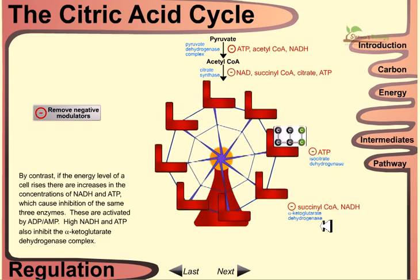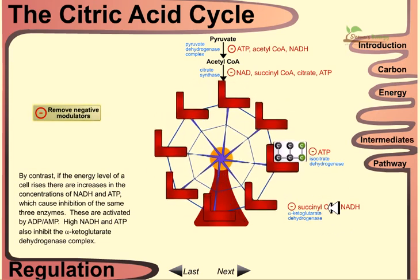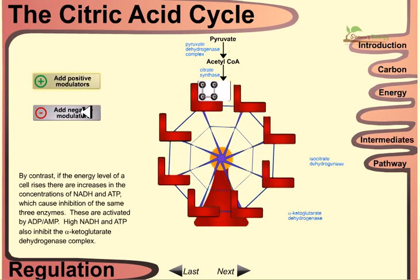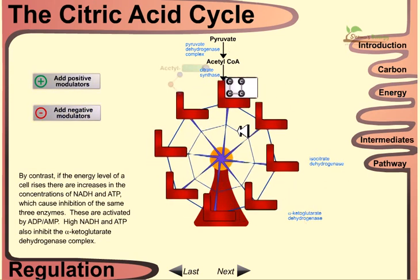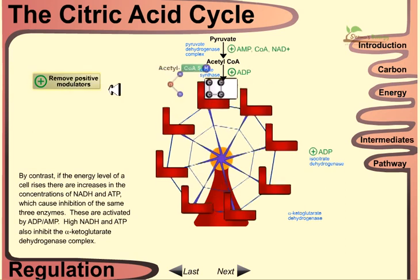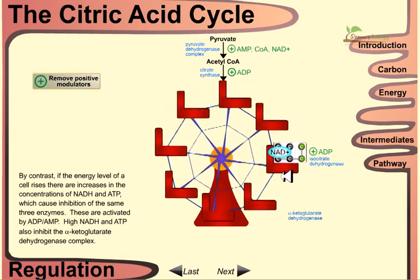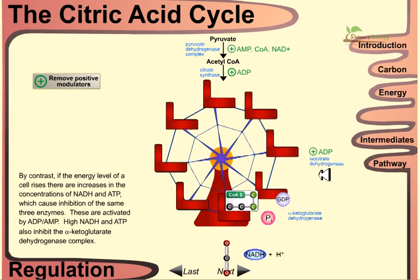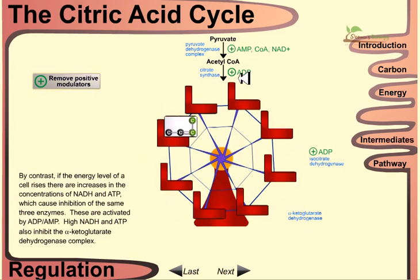Succinyl-CoA also acts as a negative modulator. If the negative modulator is removed, the cycle returns to normal. Adding positive modulators speeds the cycle back up. In summary: positive modulators act on three steps, while negative modulators act on four different steps. Positive modulators are energy-depleted molecules like AMP and ADP; negative modulators are energy-rich molecules like NADH, ATP, succinyl-CoA, and acetyl-CoA.